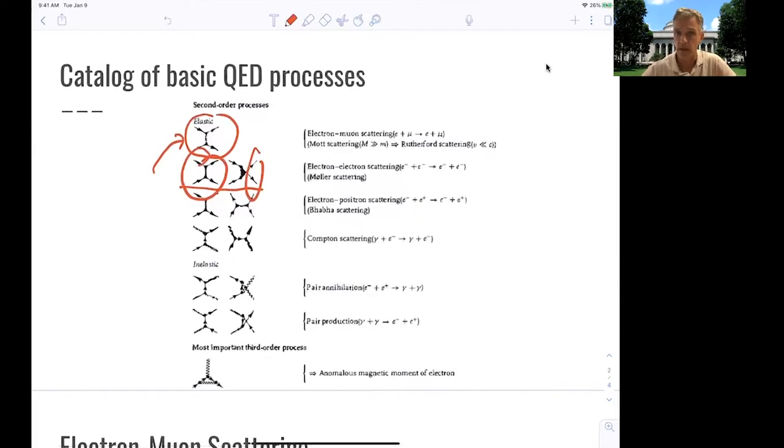The processes are including electron-positron scattering, which is called Bhabha scattering, Compton scattering, which we discussed the kinematics for already, but also inelastic processes like pair annihilation or pair production. There's a very interesting diagram here, which is the third-order diagram, which is responsible for the anomalous magnetic moment. And we'll talk more about that when we talk about higher-order corrections.